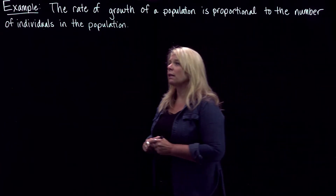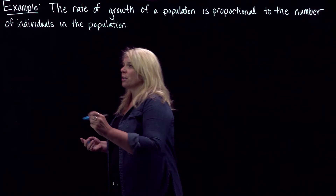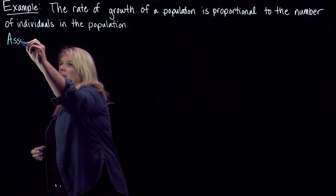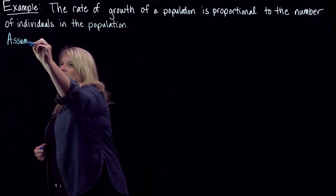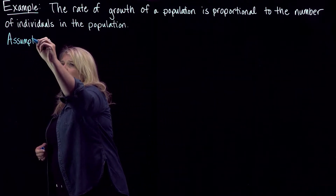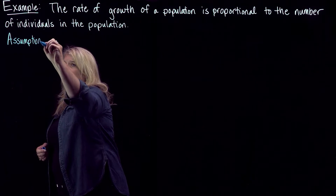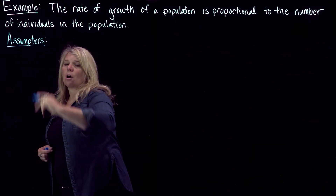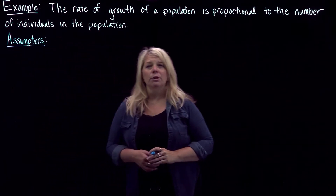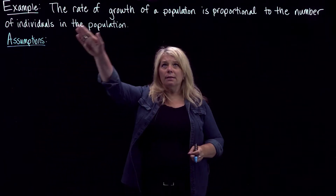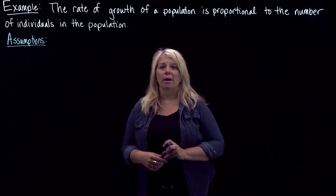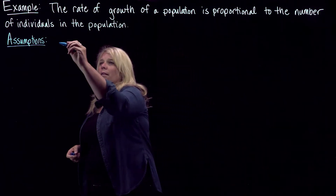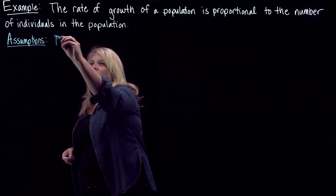The first thing we want to do is make sure that we clearly state what our assumptions are. One of those assumptions is the statement in our example — that the rate of growth is proportional to the number of individuals — and that is our starting assumption.